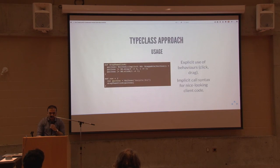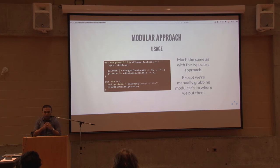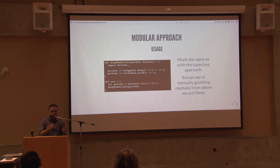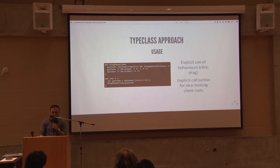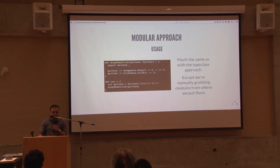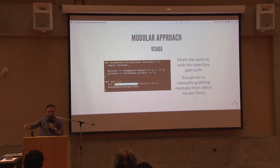Finally, we come to the usage. If you compare with the type class approach and the inheritance approach, they're all surprisingly similar. In the modular approach, you import your companion object's modules — clickable and draggable — making sure they're available in scope. Then you do your drag and click just like before: with the type class approach you use type class instances; with the module approach, you drag and click with the modules. You create the GUI icon, the recycle bin, drag it, then click it, and it gives you the expected message.